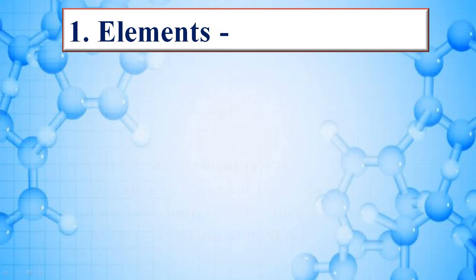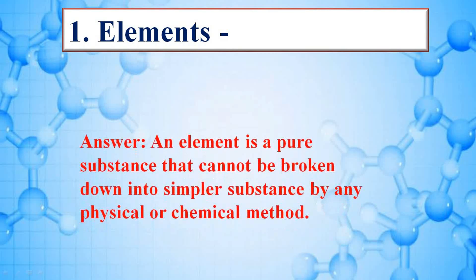Explain the following terms. Element: an element is a pure substance that cannot be broken down into a similar substance by any physical or chemical method.